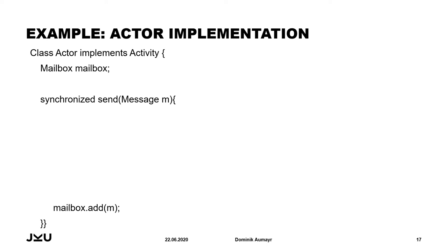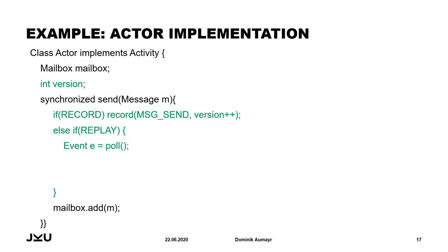Here you can see the code of an actor. It implements the activity interface. It has a mailbox in which messages are stored and a synchronized send-message method which inserts messages into the mailbox. For our instrumentation, we need a version number field to remember the next message number. In the recording step, we record a send event with the current version number and then increment it. In replay, we obtain the next event from the event sequence of this activity, attach the ordering number of that event to the message, and perform an assertion to ensure it was actually a message send event — a sanity check that the execution is behaving exactly as intended.